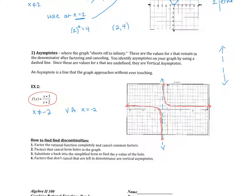To recap: there are two types of discontinuities. Removable discontinuities are shown as holes in your graph, and non-removable discontinuities are asymptotes, shown with a vertical dashed line when a factor is not removed. The steps: factor the function and cancel any common factors. The factors that cancel become holes in the graph — substitute back to find the y value. The factors that don't cancel and remain in the denominator are your vertical asymptotes.